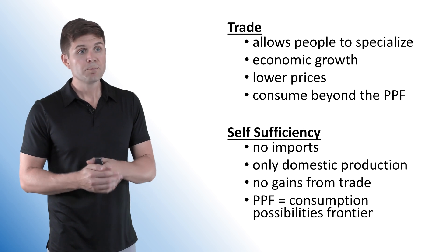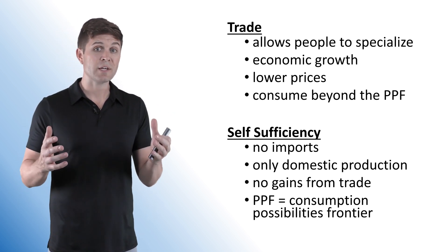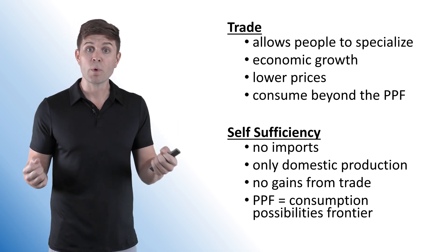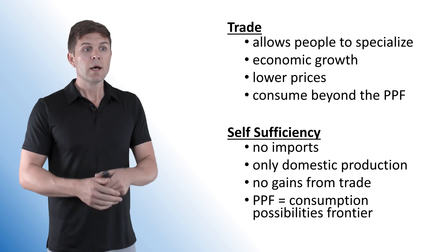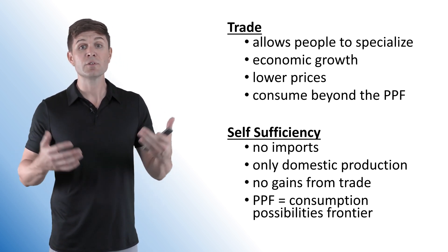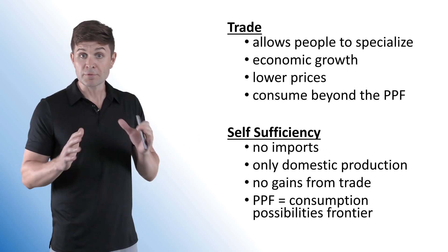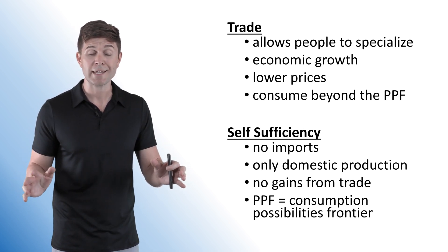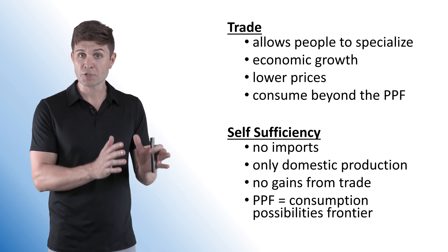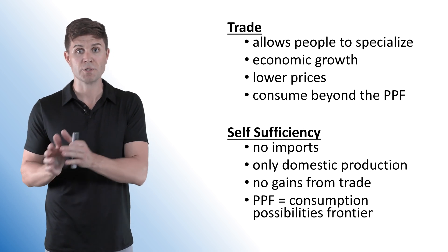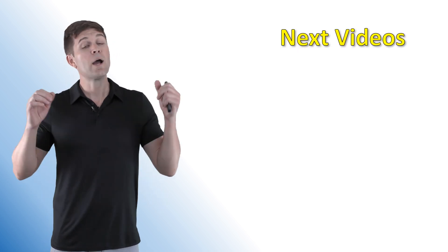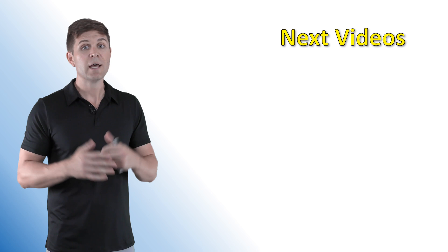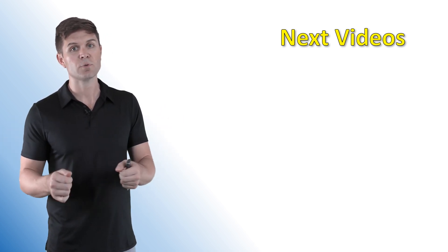To summarize: trade allows people to specialize, and specialization increases productivity. Economic growth occurs because of trade — it causes lower prices and allows us to consume beyond the production possibility frontier. Self-sufficiency, on the other hand, means no imports and only domestic production, resulting in no gains from trade, where the production possibility frontier is also the consumption possibility frontier. Please check out the FRQ practice on terms of trade and the other videos provided. Take care, thanks for watching!